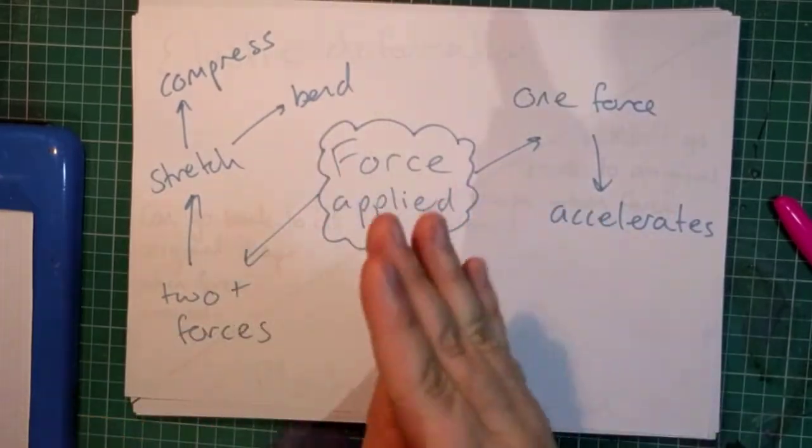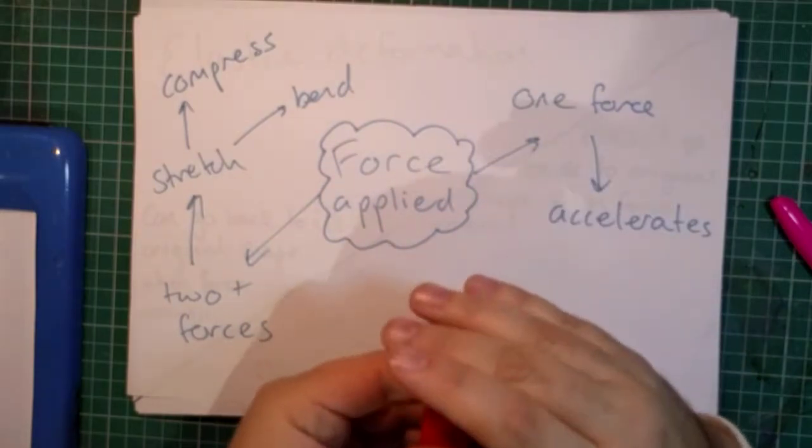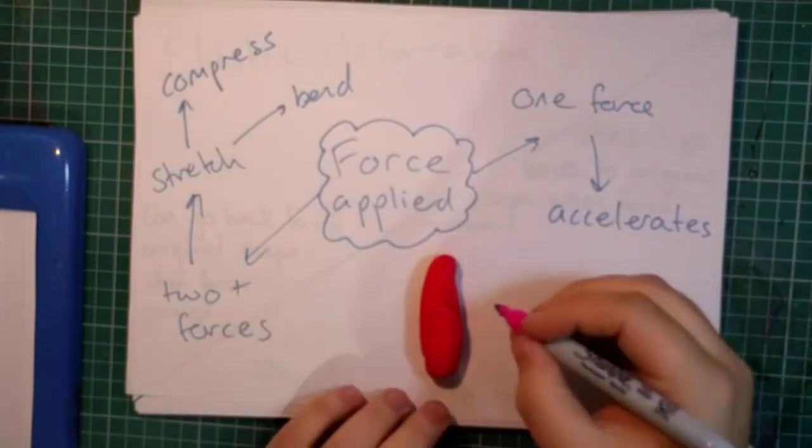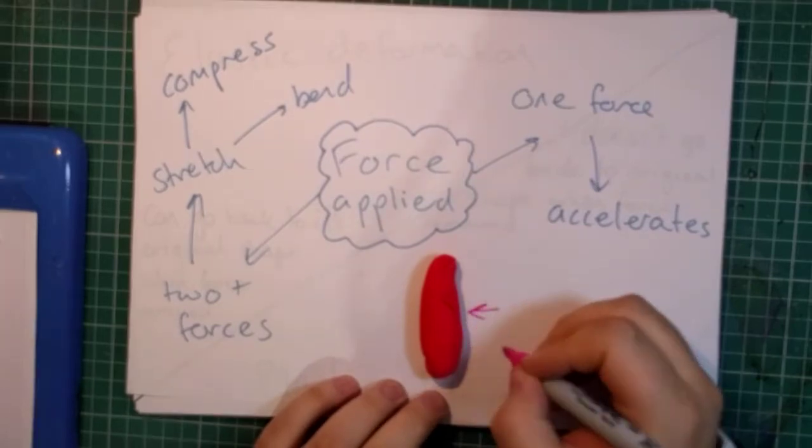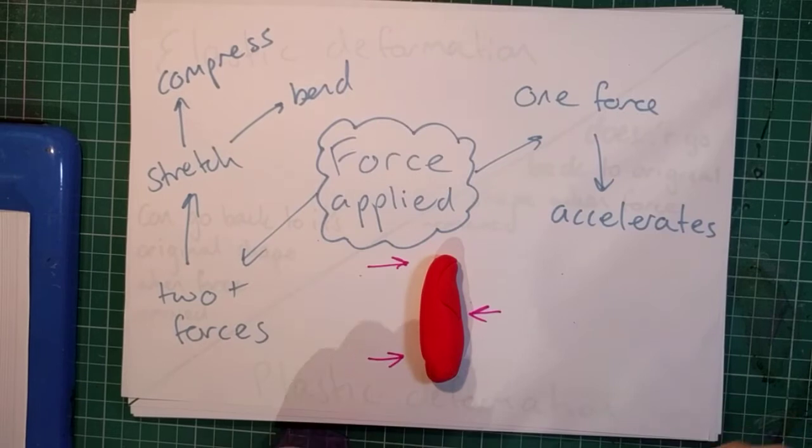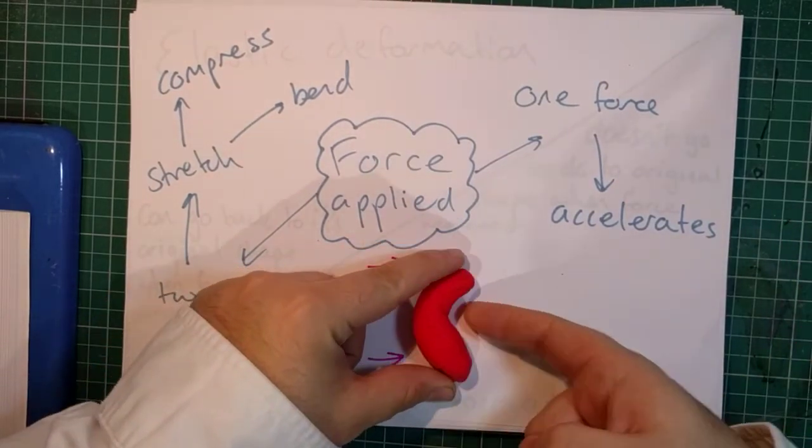And the third option, if you have an object and you have three forces acting on it, say one that way and then two this way, then you can bend the object.